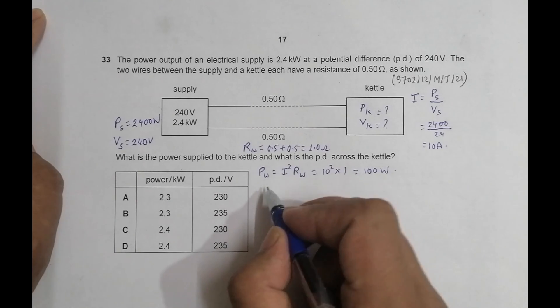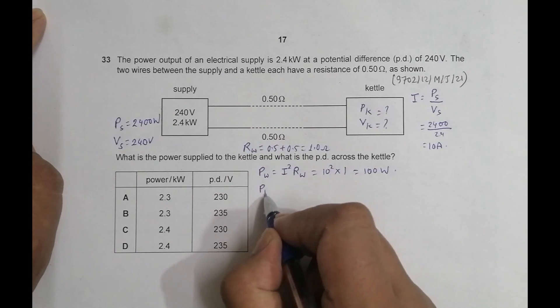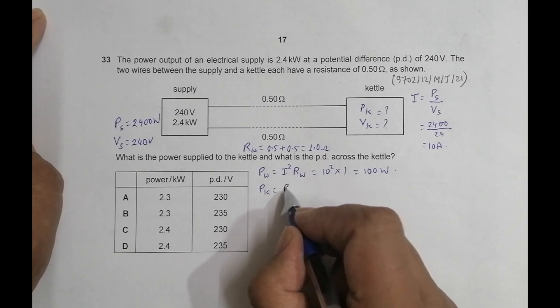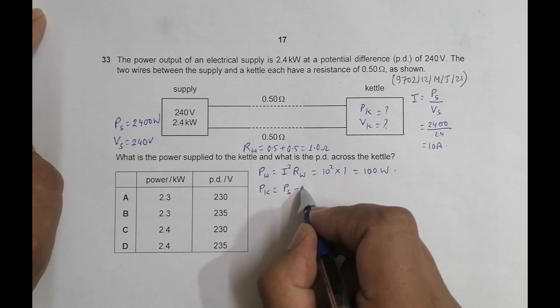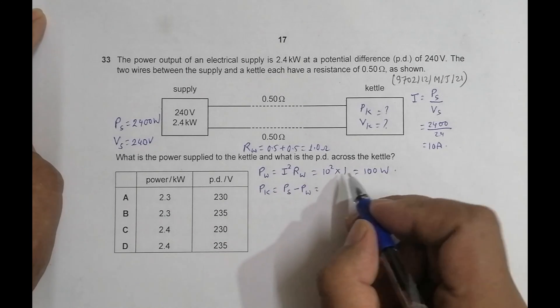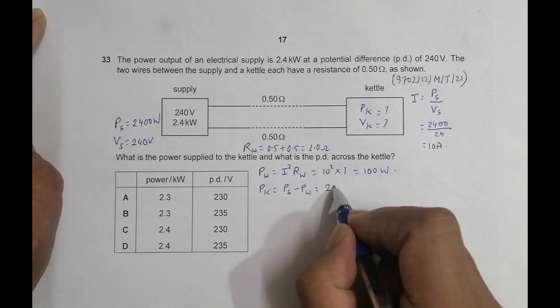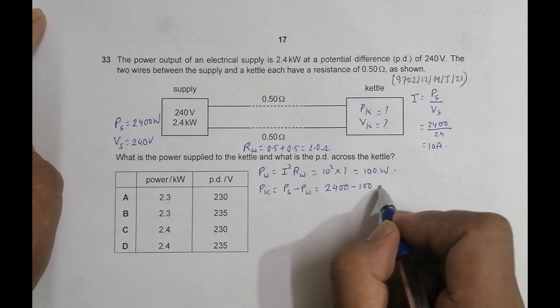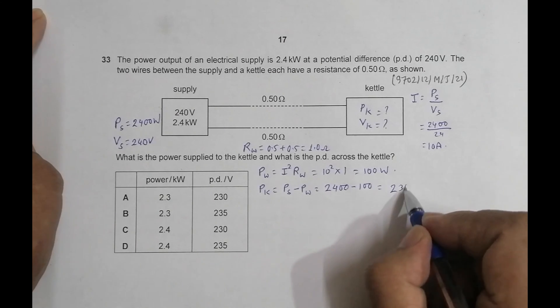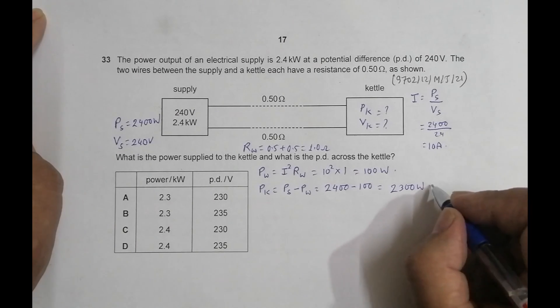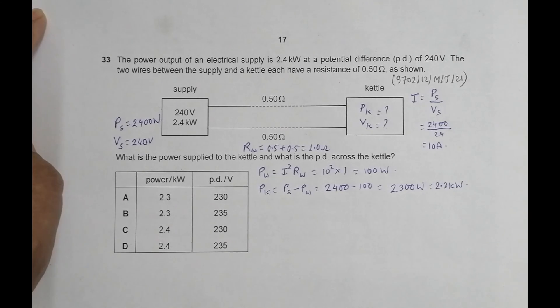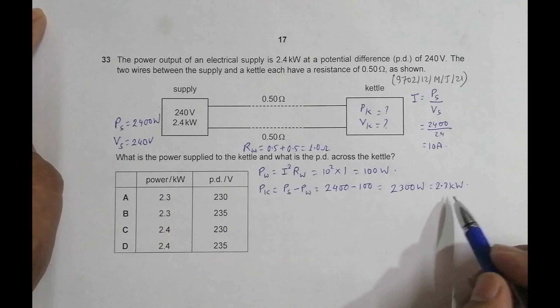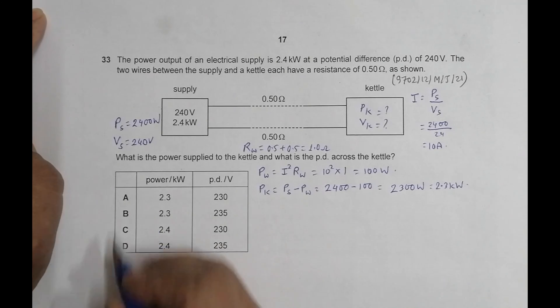This gives us power across the kettle is equal to power given by source minus power lost in the wires, equal to 2400 minus 100, equal to 2300 watts, which is equal to 2.3 kilowatts. So if you go through the answers, then choice number C and D have already disqualified. Only A and B are remaining.